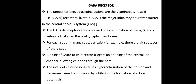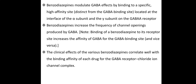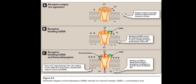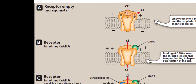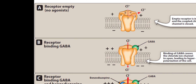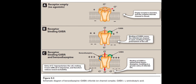To understand the mechanism, you need to understand the GABA receptor. The GABA receptor has 5 subunits, and there are subtypes — for example, there are 6 subtypes in the alpha subunit. GABA stands for gamma-aminobutyric acid, which is a neurotransmitter.